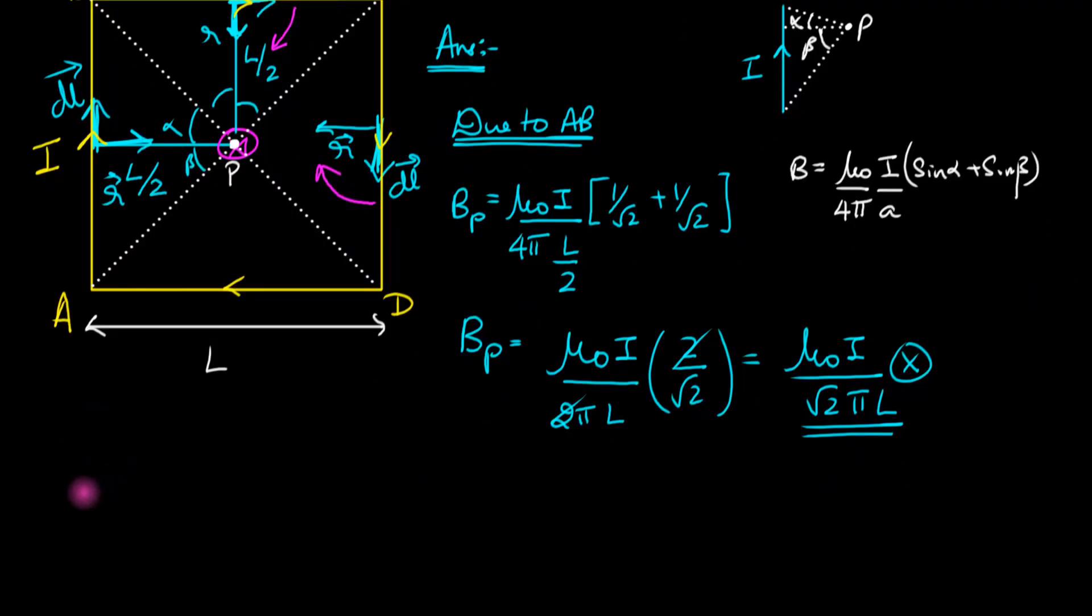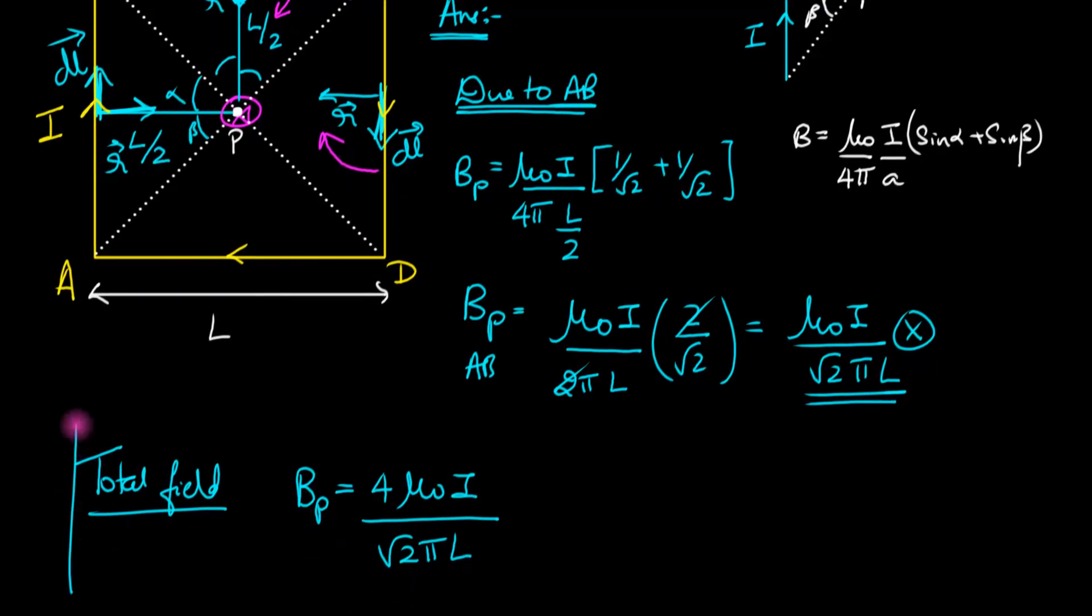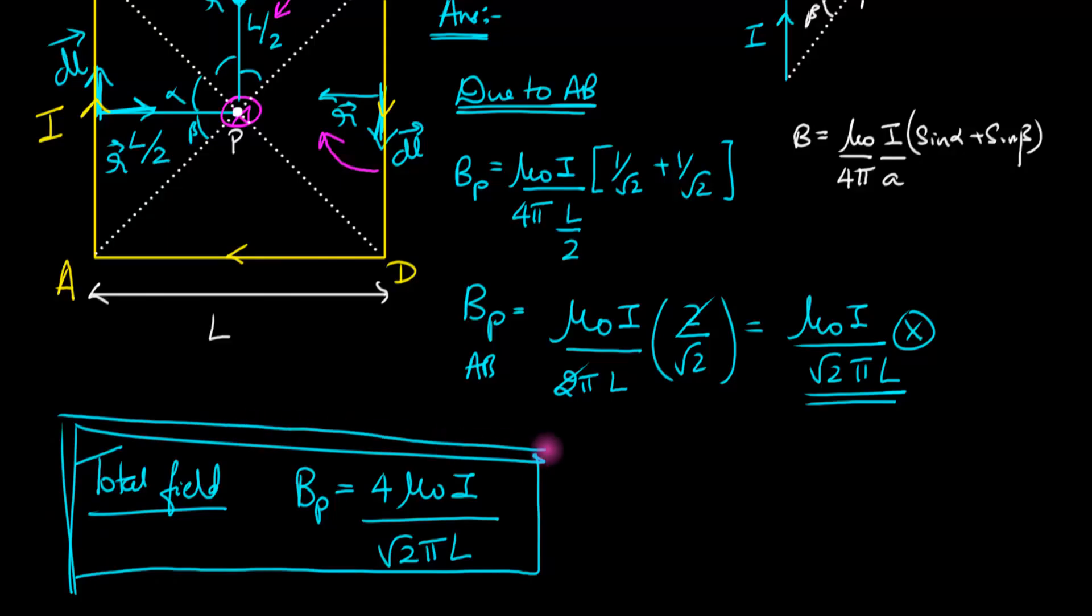The total magnetic field at point P is four times the contribution from AB alone. That gives us B_total = 4*mu0*I/(√2*pi*L). That is the answer. We have solved our problem.